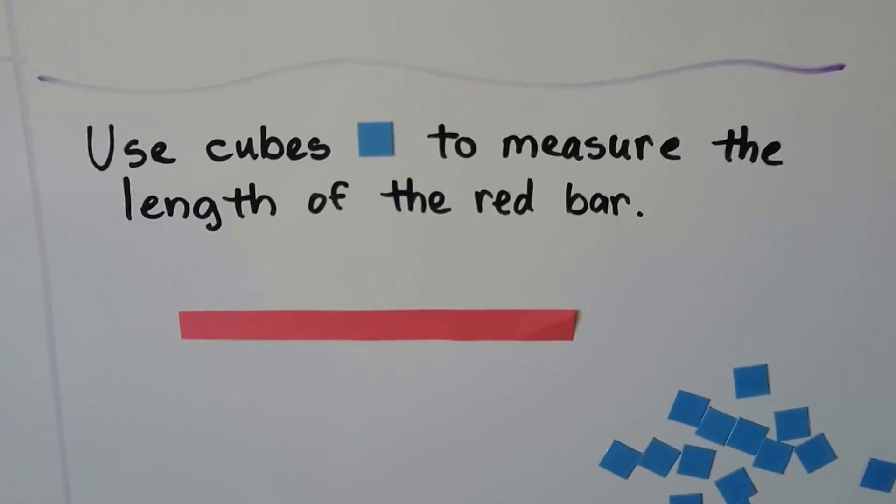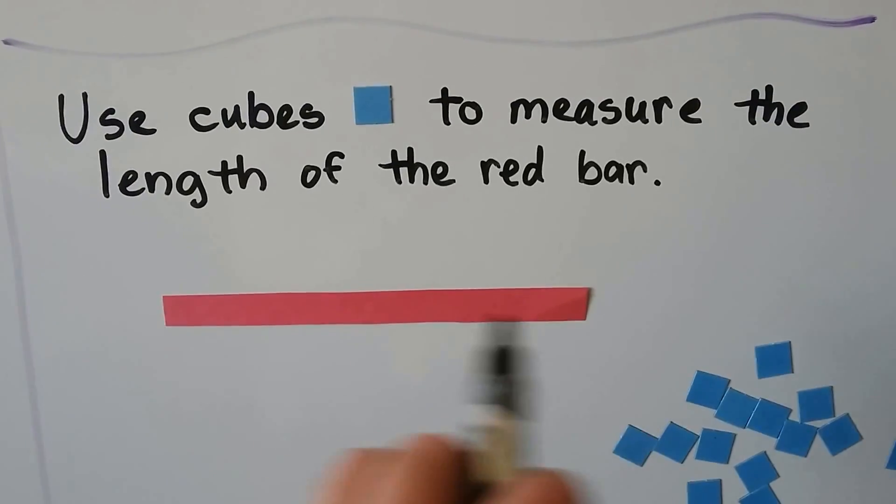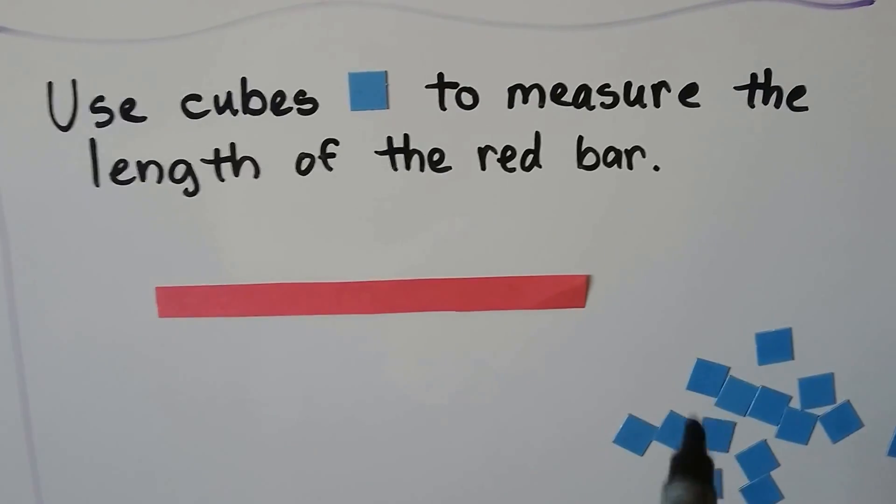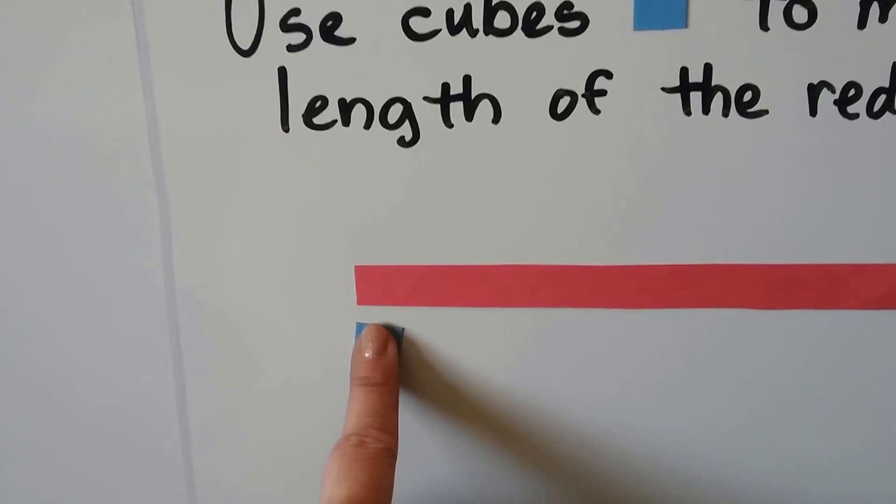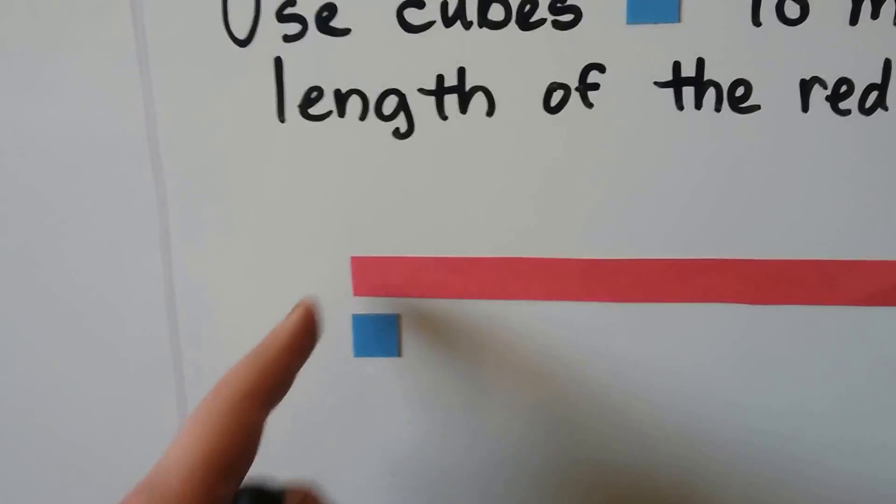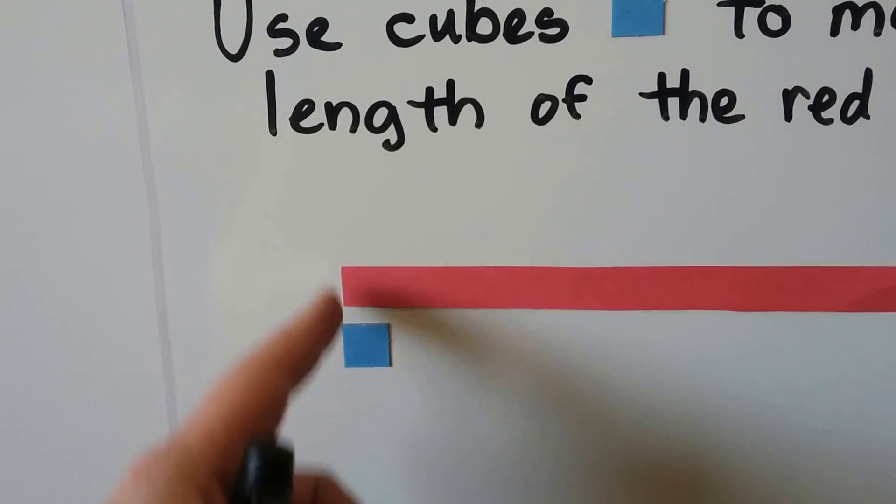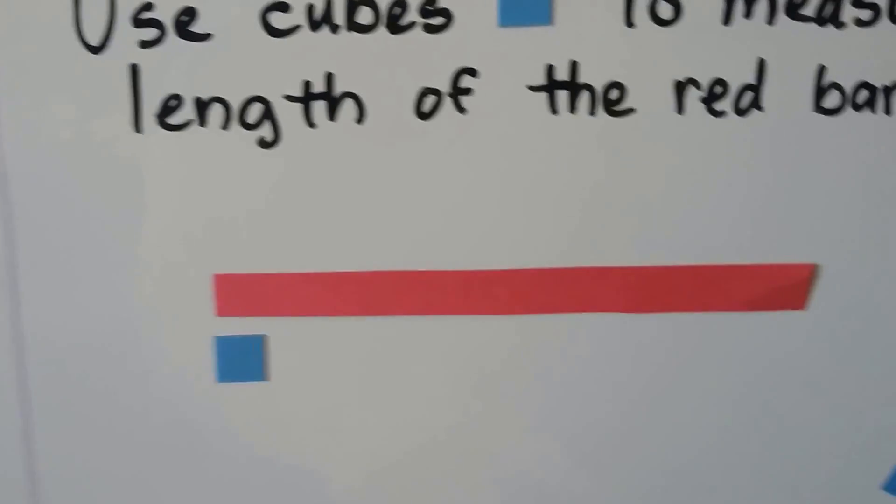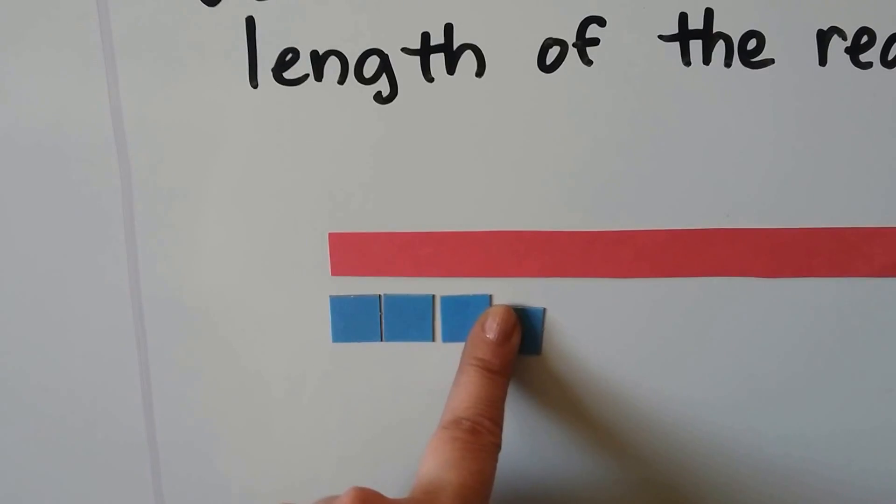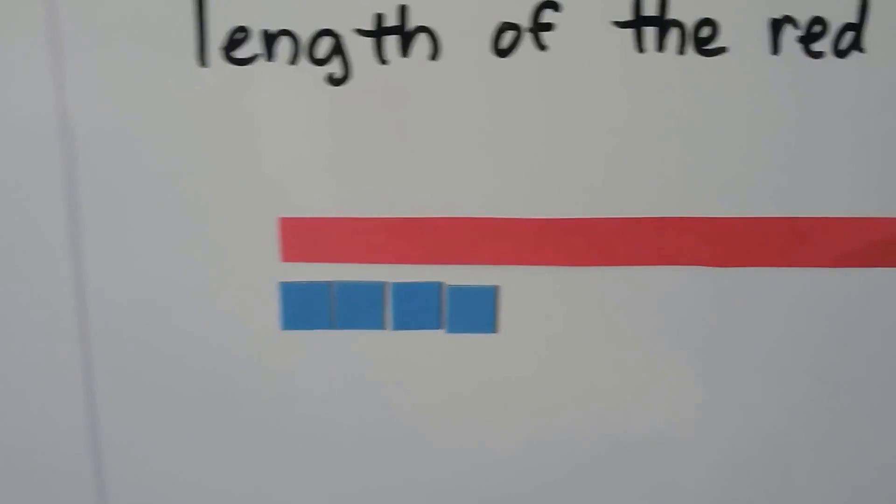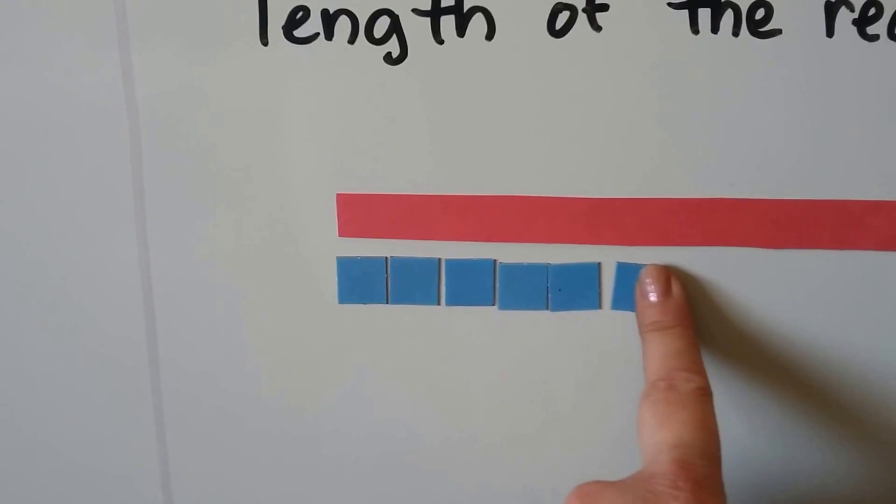Use cubes to measure the length of the red bar. So we need to see how long this red bar is and we're going to use cubes. We start with the first cube and put it right here. And we put it right where it started in the same spot like that. So it's even there. That's two, three, four, five, six.